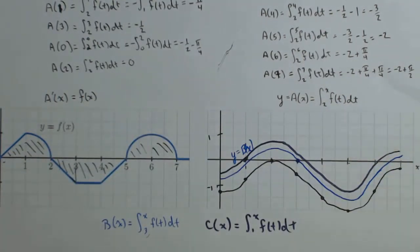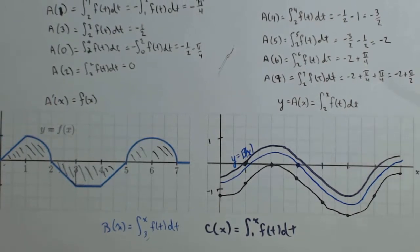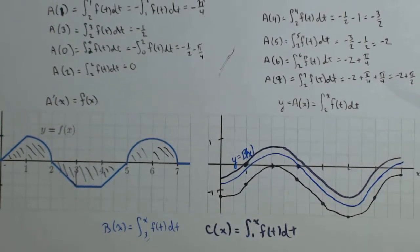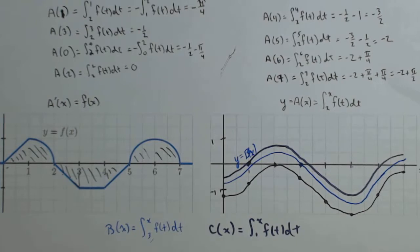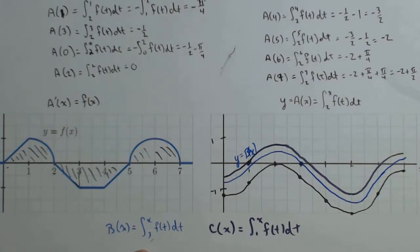So that's how we can use this idea of accumulation in the second fundamental theorem of calculus to come up with an original function given a derivative and, in this case, even a family of functions. It changes based on what our lower limit is.